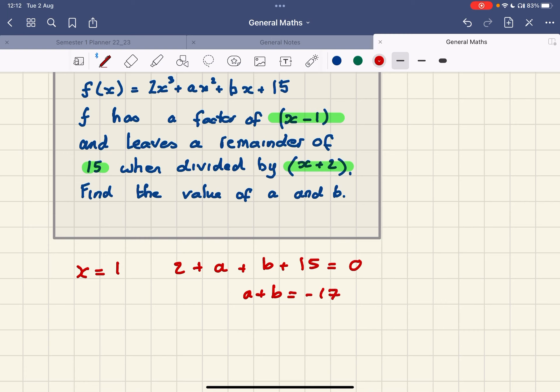Now I'm going to substitute in x equals negative 2 from the (x+2). I'm going to make x equal to negative 2, and so this time I'm going to have negative 8 times 2 when I cube it.